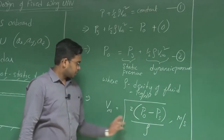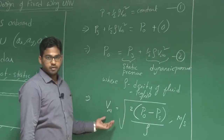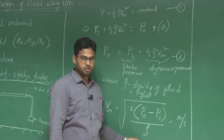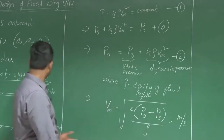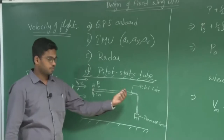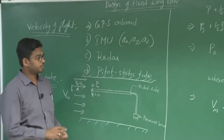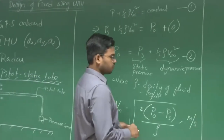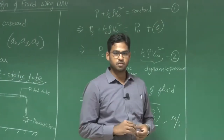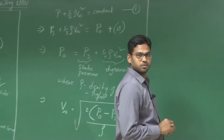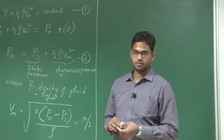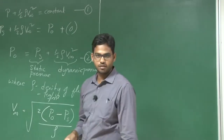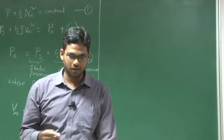Now, what are the quantities we need to know to calculate V∞? We need p₀, ps, and ρ. We established that p₀ is measured by the Pitot tube. But how about ps? What exactly is static pressure? Air is a mixture of gases. We are in the atmosphere, which is a mixture of gases characterized by random motion.